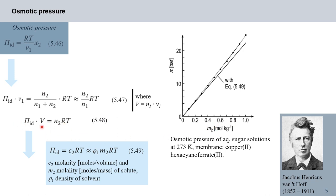Looking back at equation 548, the volume V is the volume available to N₂ moles of solute. In this form, equation 548 formally agrees with the ideal gas equation PV = NRT. We've observed such formal equivalencies between the behavior of ideal gases and that of ideal dilute solutions before, and you will see many similarities like these throughout physical chemistry.